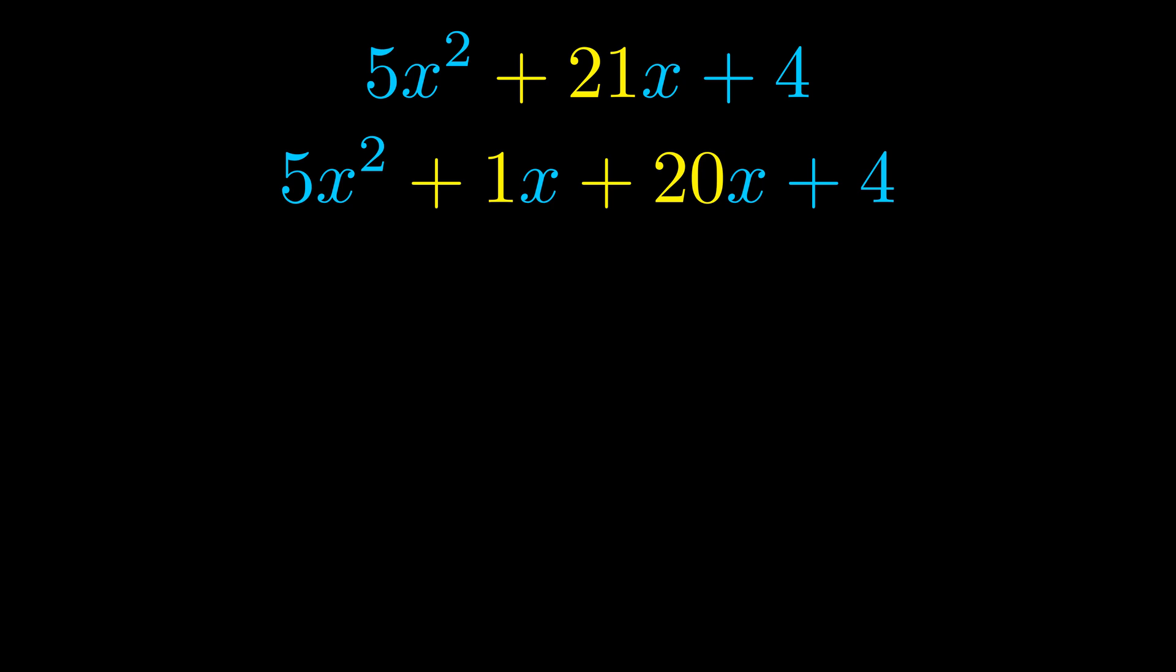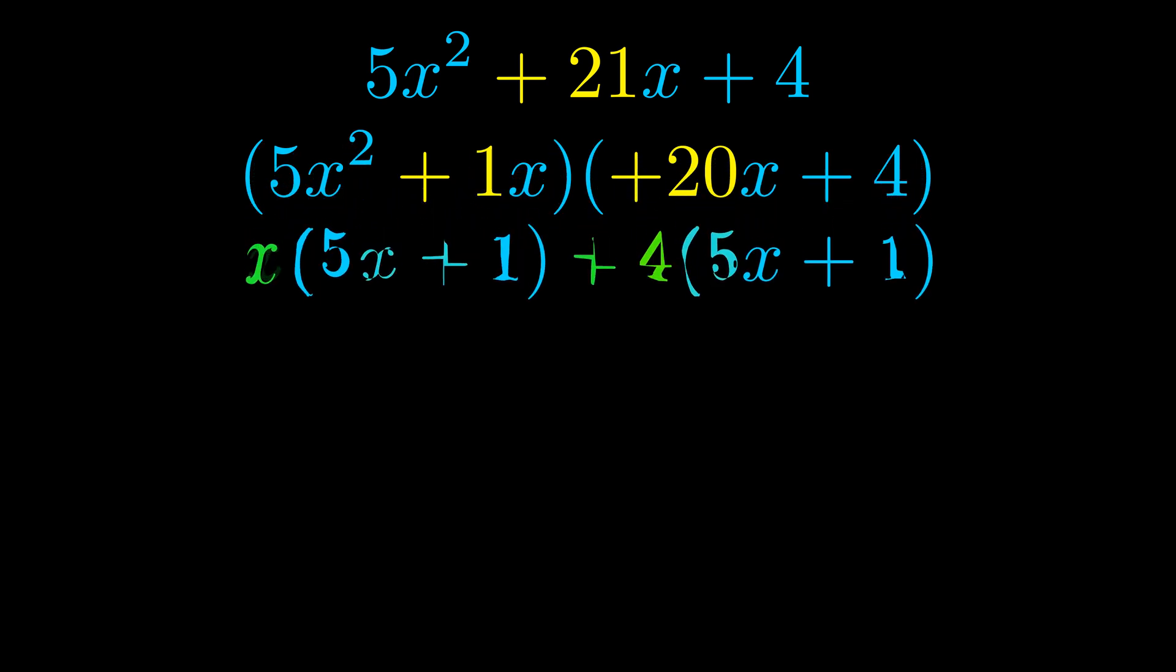Once we've done this we go ahead and put parentheses around the first term and the last term. And we do that so that we can take the greatest common factor out of both terms. We can see the greatest common factor is now outside in green.